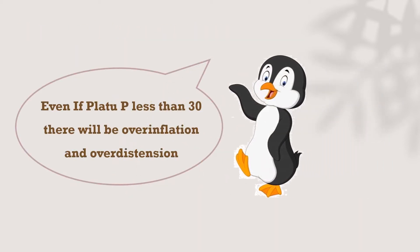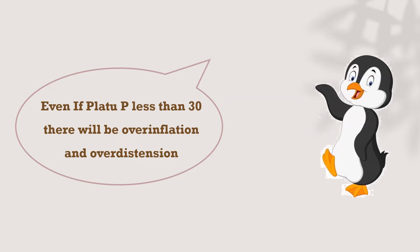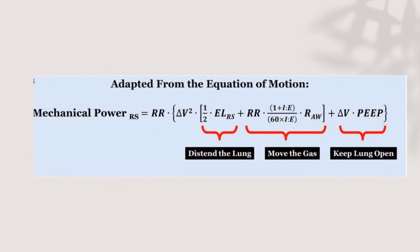We should note that even if we use plateau pressure less than 30, there will still be overinflation and overdistension in some lung units. The mechanical power equation of ventilation shows the negative impact of mechanical ventilation on the lung units. This depends on three key components: respiratory rate, tidal volume, and PEEP.